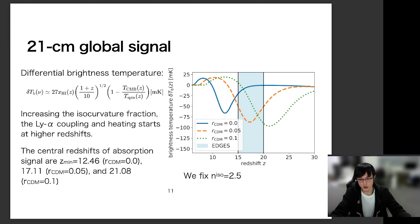So the central redshift of the absorption signal, the minimum, is increasing as the isocurvature fraction is increasing.